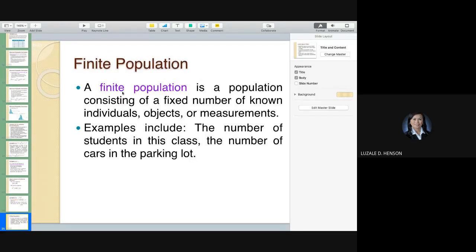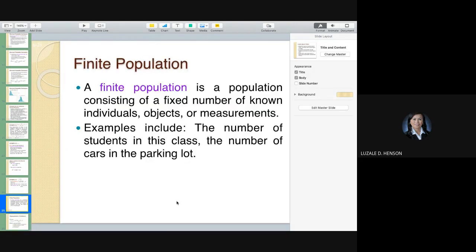Now let's define finite population. It is a population consisting of a fixed number of known individuals. When you can count the population, it's called finite. Like, for example, the number of students in this class, the number of cars in the parking lot. When you can count it. But if you cannot count it, then you have an infinite population, like the number of mosquitoes. You can't count that. So that's for the binomial distribution, class.